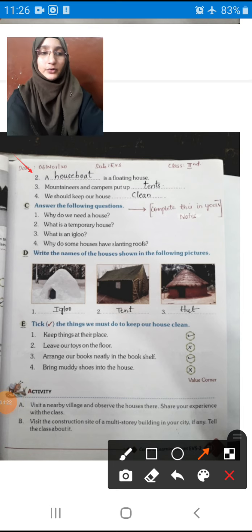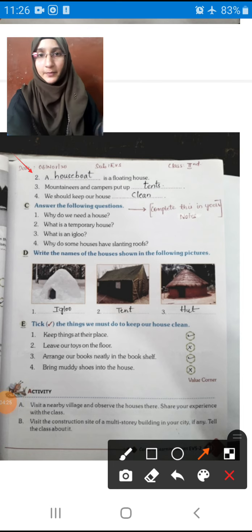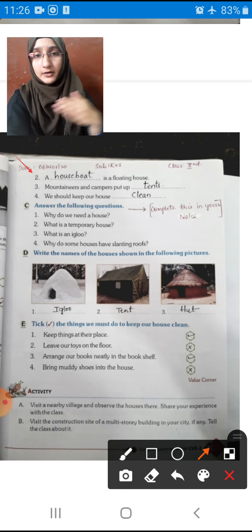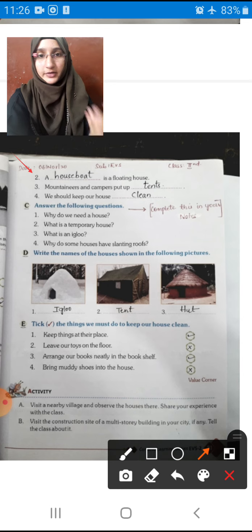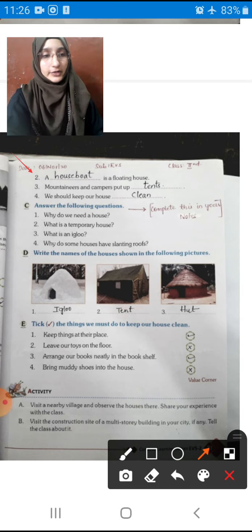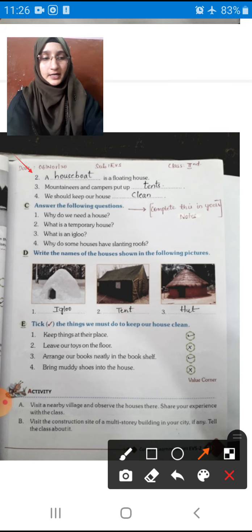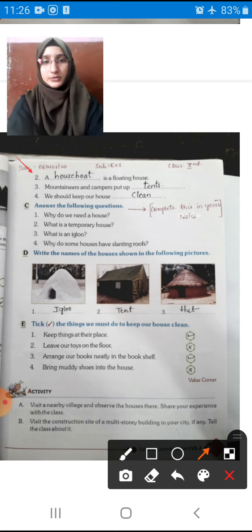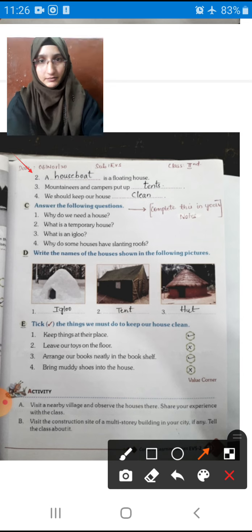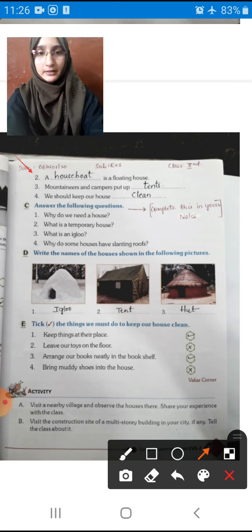Now turn your page and come to page number 37. Second one: A blank is a floating house. Who's floating on the water? A boat obviously. So a house made on the boat is called floating house children. Write down houseboat. Third one: Mountainers and campers put up what when they go for a few days? They make tent children. So we have to write T-E-N-T-S, tents. Fourth one: We should keep our house how? We must keep our house clean. So write down clean: C-L-E-A-N.